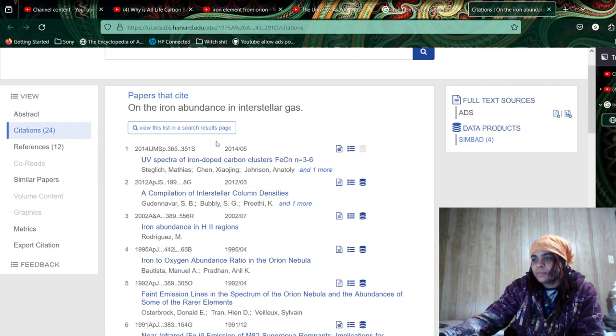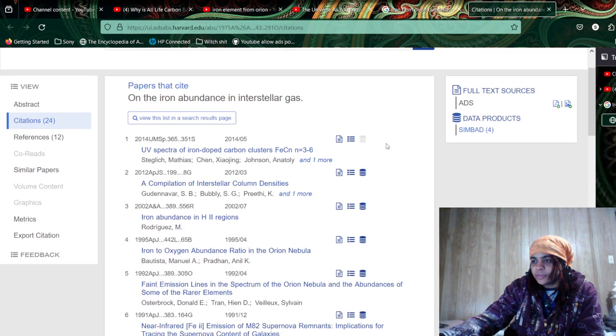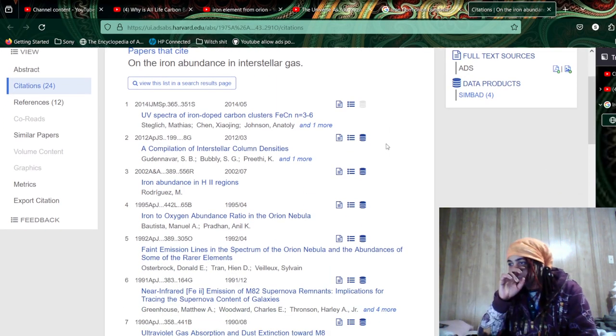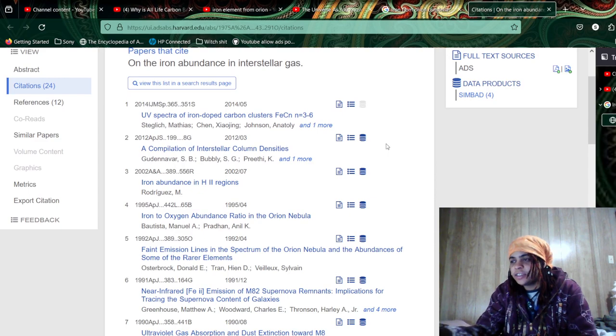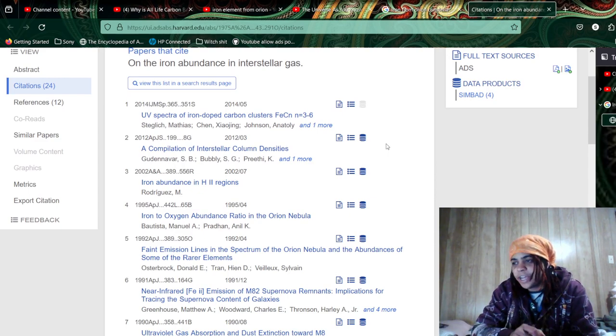Citations. Let's see. Oh, there you have publications. Papers that cite on the abundance of interstellar gases. Okay. Let's see. Iron abundance in H double regions.